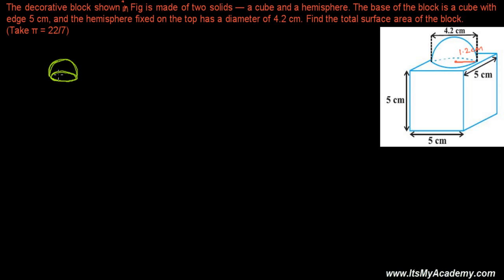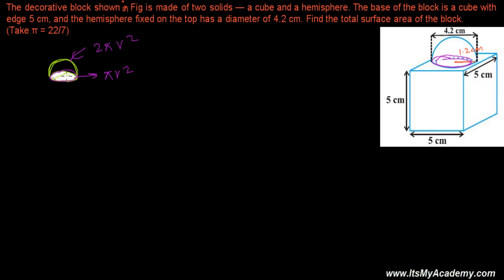When you place the hemisphere onto the cube, the flat circular base of the hemisphere gets attached to the top face of the cube. The circular base has area π r², and the curved upper portion has area 2π r², since the complete surface area of a sphere is 4π r² and half of that is 2π r².